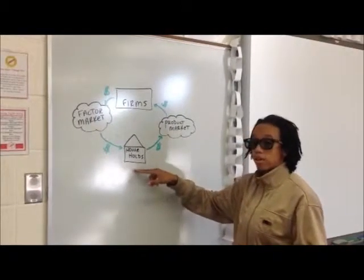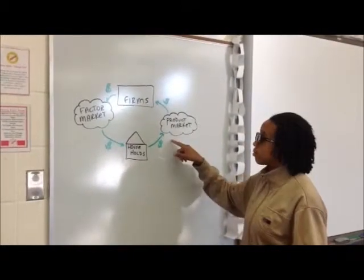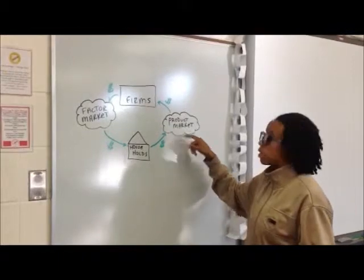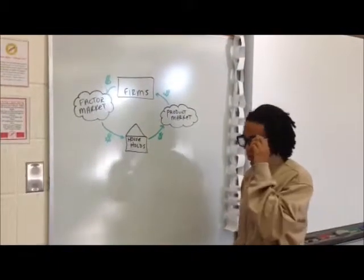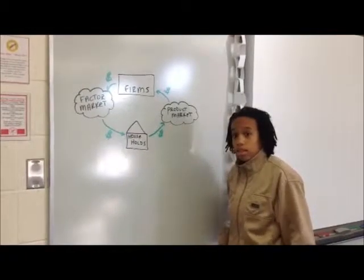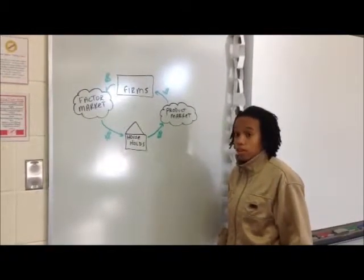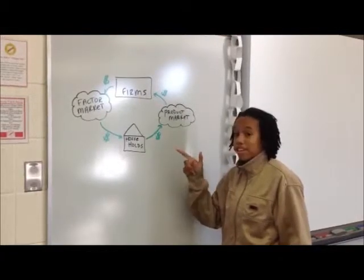When the households have more income, they spend more money on products, which brings back revenue to the firms. When the firms have more money, they put more money into the workers. It makes a cycle.